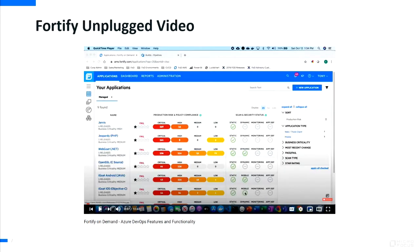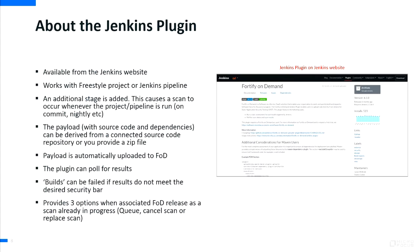There's also a Jenkins plugin, available from the Jenkins website. It works with freestyle projects or Jenkins pipelines. Again, an additional stage is added to your pipeline, and the payload — your source code and dependencies — is packaged together and uploaded to FOD. This plugin can poll for results and can fail builds if the code doesn't meet the security bar. Like the Azure DevOps plugin, it can queue, cancel, or replace scans as needed.